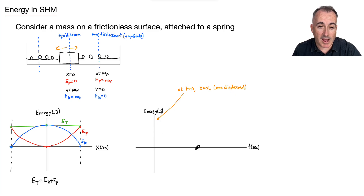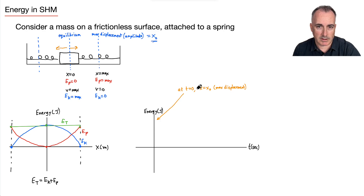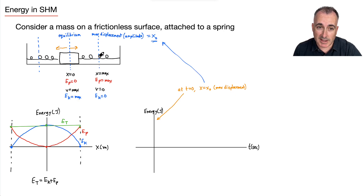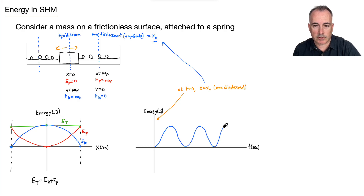I can do the same idea but with time on the horizontal axis. It's important to consider when we start our timer — are we starting at t = 0 in the middle or at a maximum displacement? If we decide that at t = 0, x = x₀, which is maximum displacement, then at that moment the kinetic energy is zero. Over time, EK follows a sine curve going up and down repeatedly — like this — going on forever assuming no friction or resistive forces.